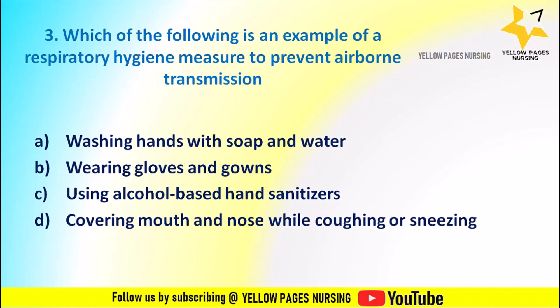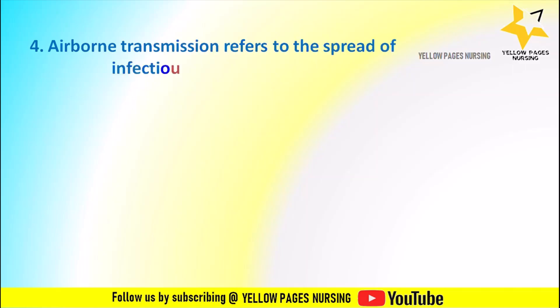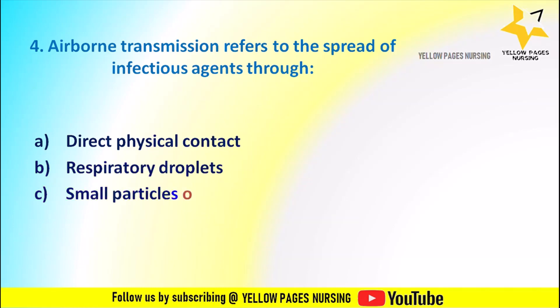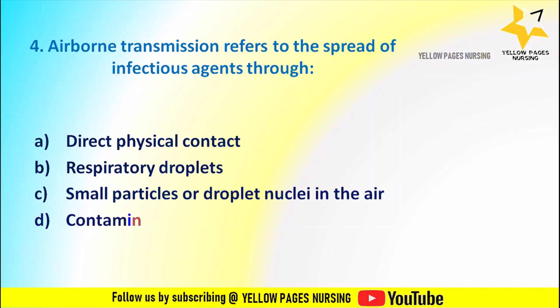Question 4: Airborne transmission refers to the spread of infectious agents through — options: A. Direct physical contact, B. Respiratory droplets, C. Small particles or droplet nuclei in the air, D. Contaminated surfaces. You can mention your answers in the comment box.